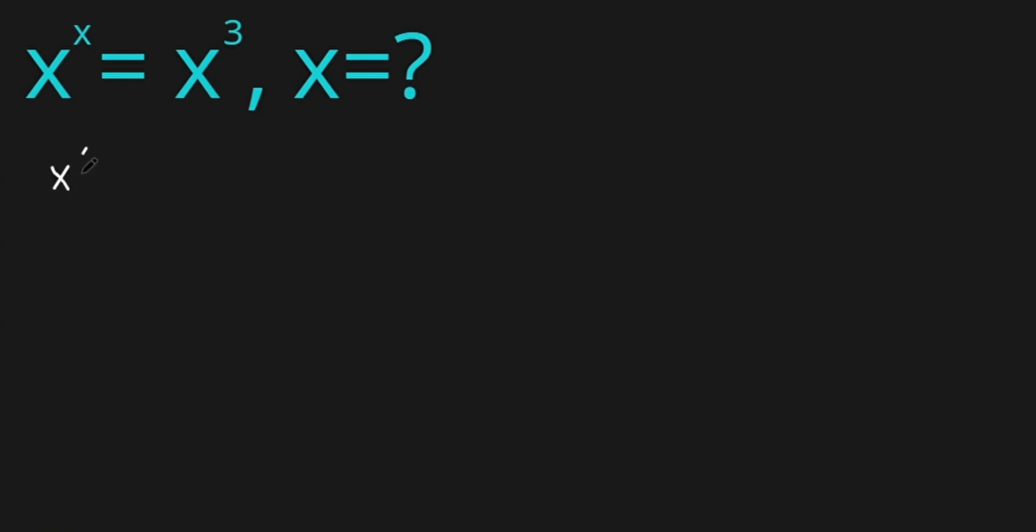Okay, so let's start. x to the power of x equals x cube. Now let's multiply both sides by 1 over x cube. So we have x to the power of x times 1 over x cube.